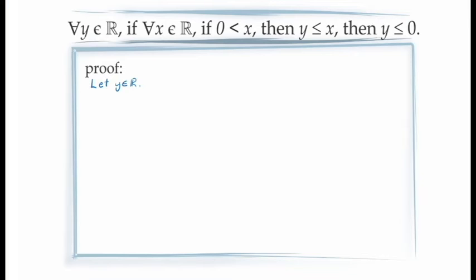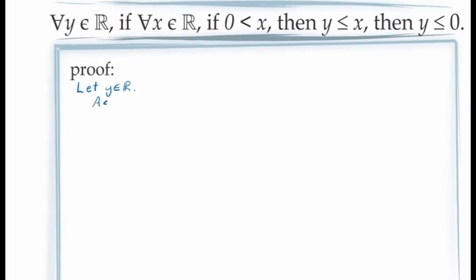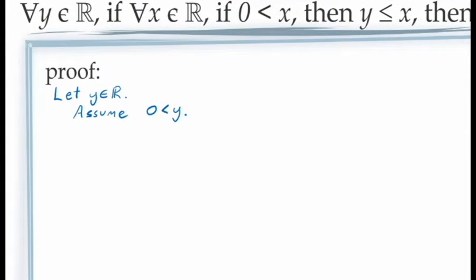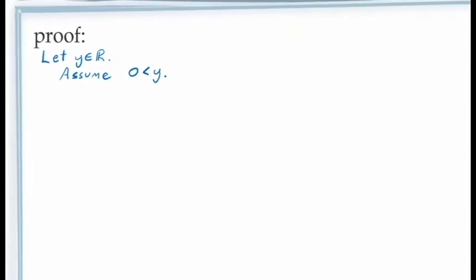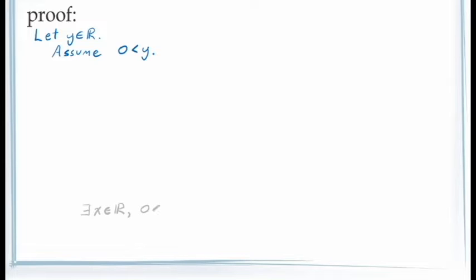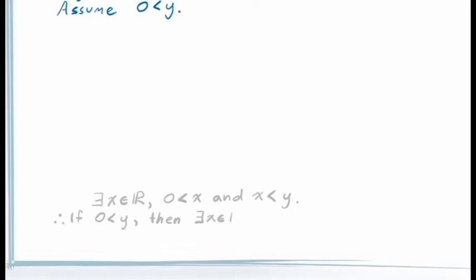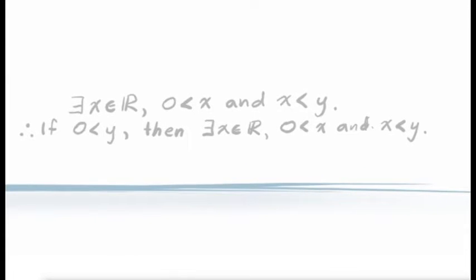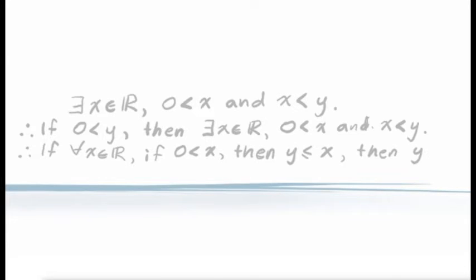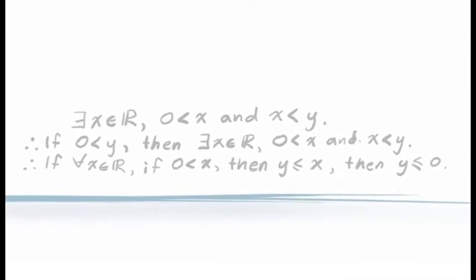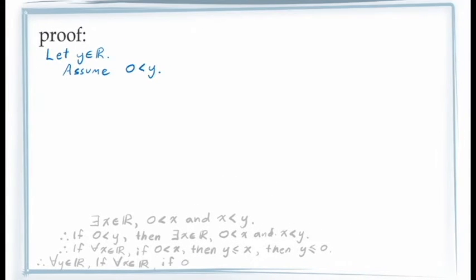Let's return to our proof. If we're going to prove this large conditional statement using a proof by contraposition, we begin by assuming the negation of the consequent — that is, 0 is less than y. We are then required to demonstrate the negation of the antecedent: there is at least one value of x for which 0 is less than x and x is less than y. If we successfully demonstrate this, the principle of conditional proof allows us to conclude: if y is greater than 0, then there is at least one value of x in the real numbers for which 0 is less than x and x is less than y. We can then write this in its contrapositive form, and since y is an arbitrary real number, the principle of universal generalization lets us conclude this holds for all values of y.